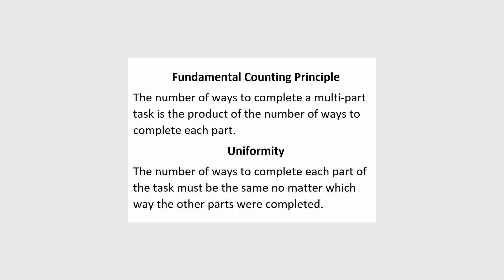However, there is a condition. This condition is called uniformity. It has to be the case that the number of ways to complete each part of the task is the same, no matter which way the other parts were completed. So sometimes we have to think through very carefully how we want to divide the task into parts.